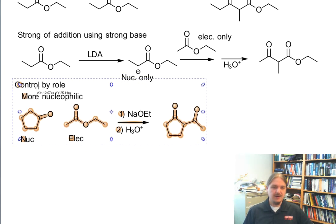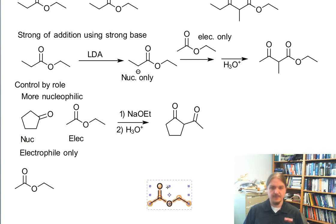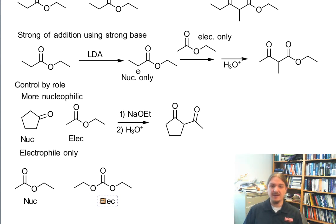The other opportunity is to use something that can only be electrophile only. So in this case, I'll pick ethyl acetate as my nucleophile. But I want to pick something that can't be a nucleophile. And so one example of that would be diethyl carbonate, this carbonate ester. No alpha hydrogens, can't be a nucleophile.